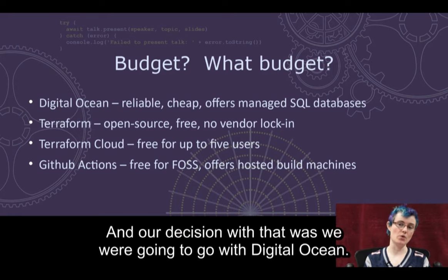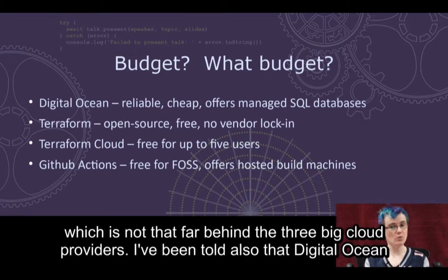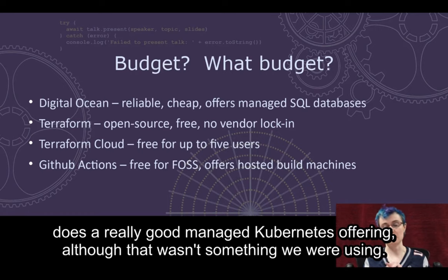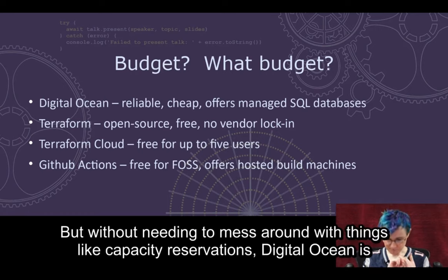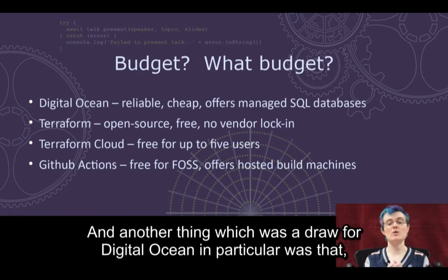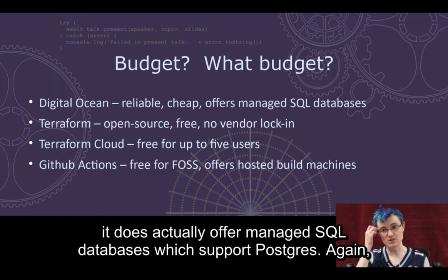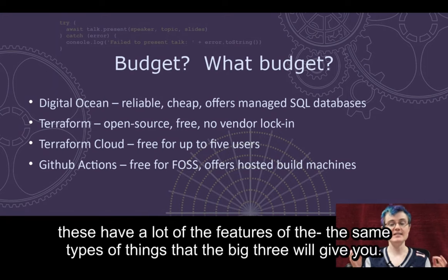Our decision was to go with DigitalOcean for a couple of different reasons. The first is that DigitalOcean has a level of reliability which is not that far behind the three big cloud providers. I've been told also that DigitalOcean does a really good managed Kubernetes offering, although that wasn't something we were using. Without needing to mess around with things like capacity reservations, DigitalOcean is really, really cheap compared to AWS or Azure — it's a fraction of the price. And another draw was that unlike a lot of smaller cloud hosts, it does actually offer managed SQL databases which support Postgres.